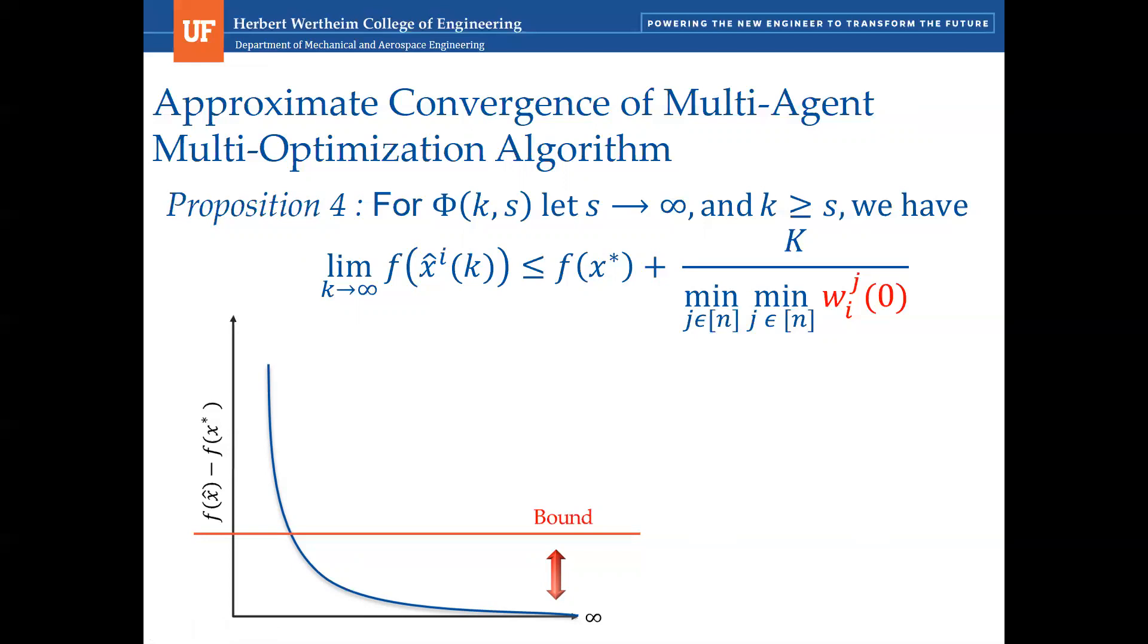We have the objective function value of X hat. X hat being the average of agent's decision vector is less or equal to the objective function value of the optimal solution plus an offset. The offset is a function of the minimum of the agent's initial priorities, and the constant K is known in our algorithm. This means that agent's initial priorities influence the performance bound. This is not surprising since the weights are computed from agent's initial priorities. What is nice about that is that agents have a certain control over the algorithm convergence.